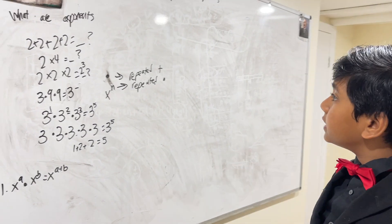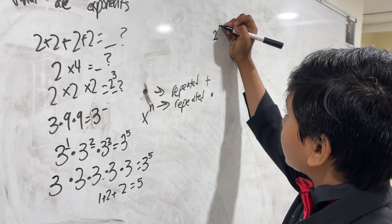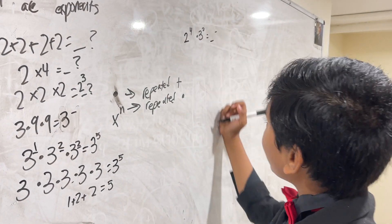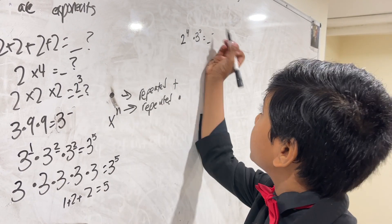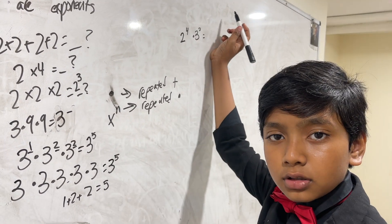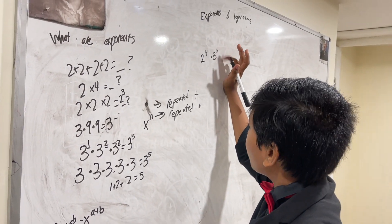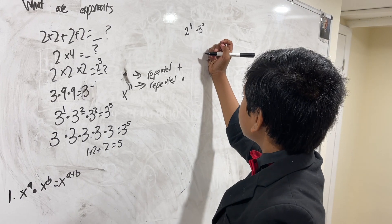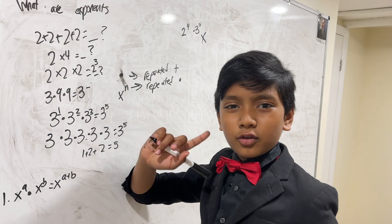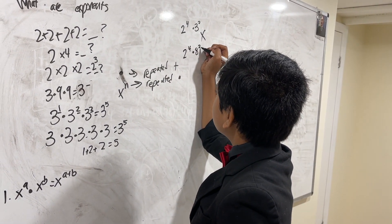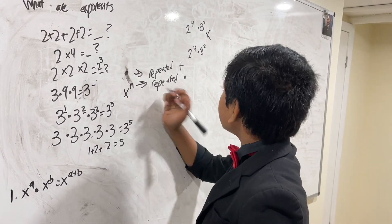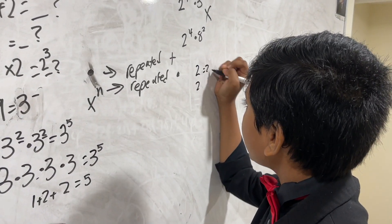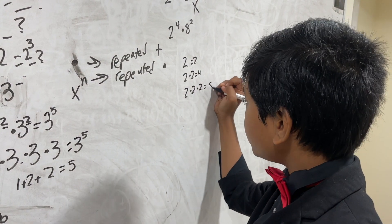What happens if we take different numbers and multiply them together? How could you express two to the fourth times three to the second in terms of whole-number exponents? Two times two times two times two times three times three times three — no matter what, you can't express this with whole-number exponents. But what if we replace that three with an eight? Eight is two cubed, so that changes things.